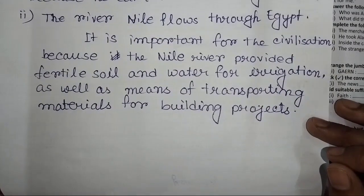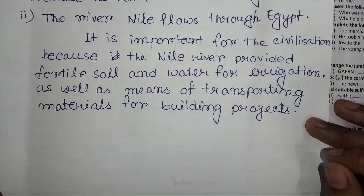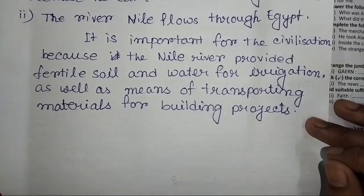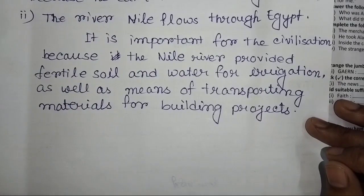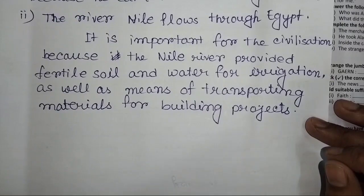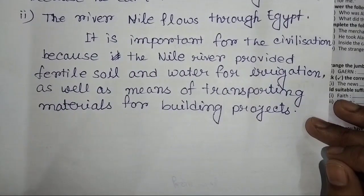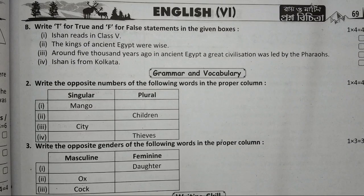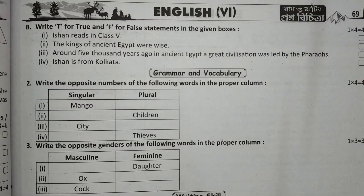First of all, the Nile River provided soil for irrigation and water for irrigation, as well as transporting materials for building projects. The soil and water from the Nile were used for producing crops and as a source of irrigation.